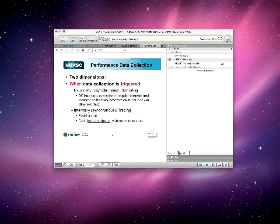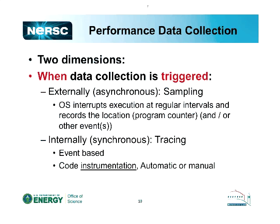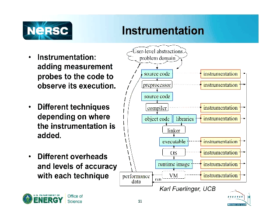The important thing about sampling is that it's very low overhead and can be done very easily. The other way of doing it is with data collection triggered internally to your application — synchronously — and it's called tracing. It's done on an event-by-event basis via a process called instrumentation, which is the subject for the rest of our talk.